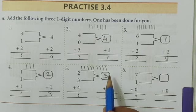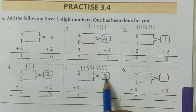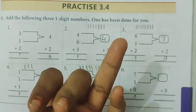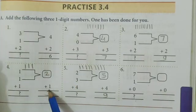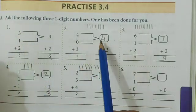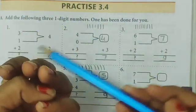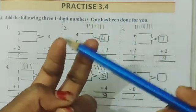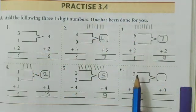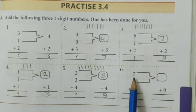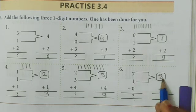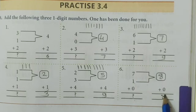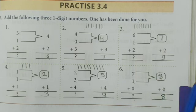Another method: from 5, just count 4 numbers forward — 6, 7, 8, 9 — you get 9. Next example: 7+1+0. First 7+1=8, then 8+0=8. Adding zero has no effect, so the answer is 8.